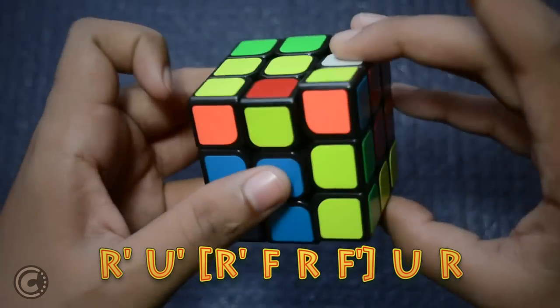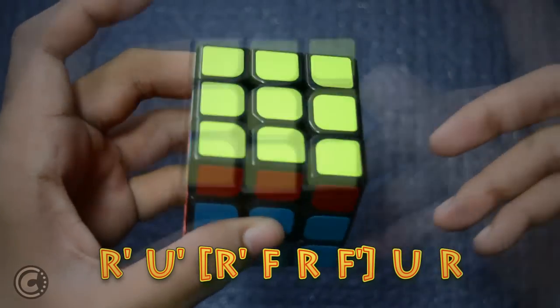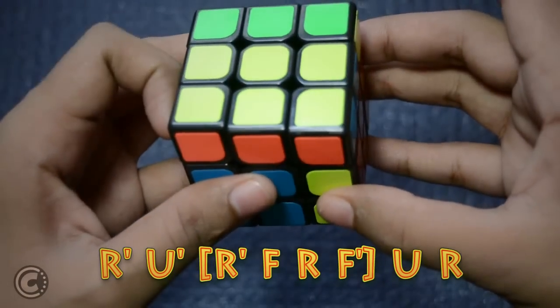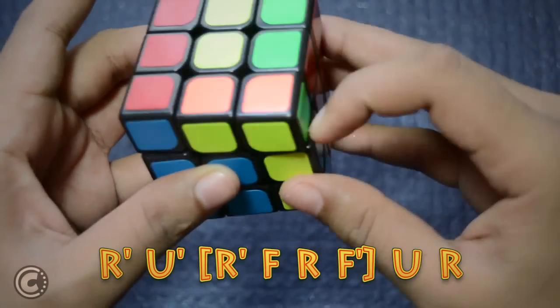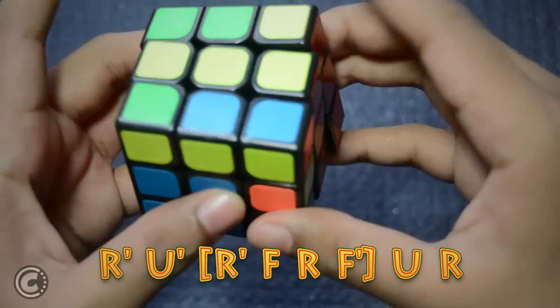R' U' R' F R F' U R. So it's like R' U' Sledgehammer then U R. Just reverse the starting move R' U' Sledgehammer then reverse the move.